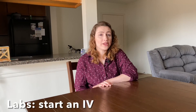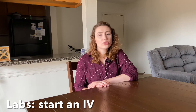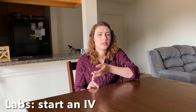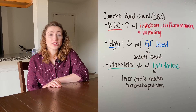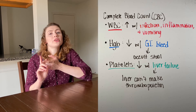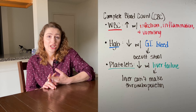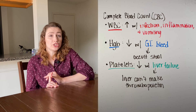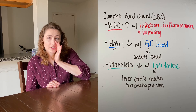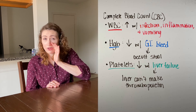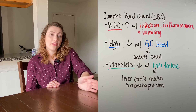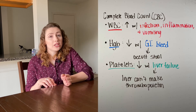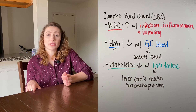You'll almost always get labs on these patients, and typically you'll start an IV and draw labs at the same time since you're likely going to be giving fluids, nausea, and pain medications. On the CBC, the white blood cell count will be elevated with inflammation, infection, or even vomiting. Hemoglobin will be low in cases of GI bleeding — if that's the case, get an occult stool sample to check for blood in the stool. Platelets will be low in liver failure due to the liver's inability to produce thrombopoietin, the hormone that makes platelets.